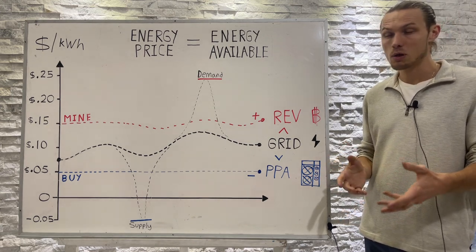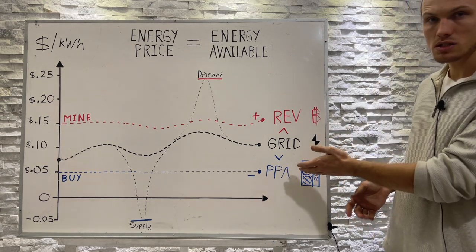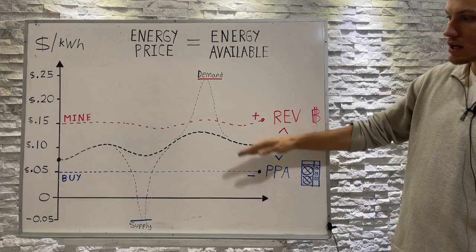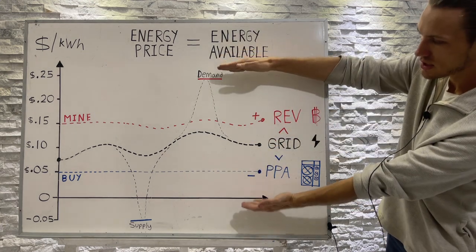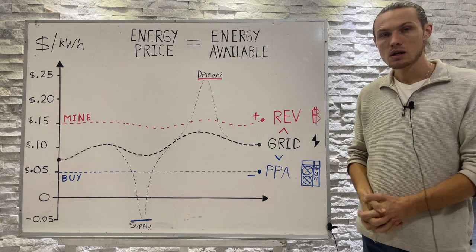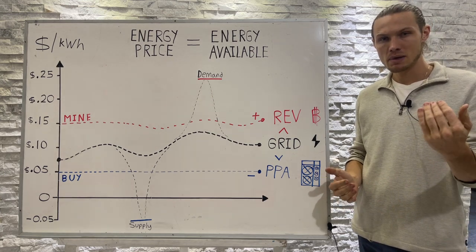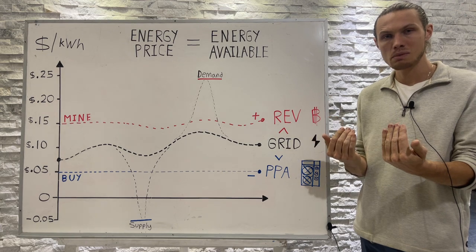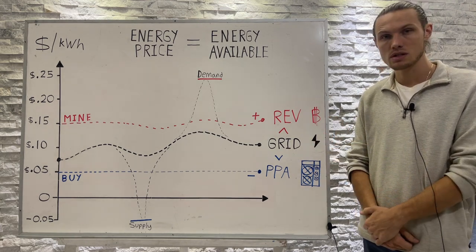But if there is an energy customer out there that will dynamically change how much power they are buying or selling to bring the price of electricity back into stability — well, that's the perfect customer. Dynamic energy supply needs dynamic energy demand: an economic incentive user of electricity.